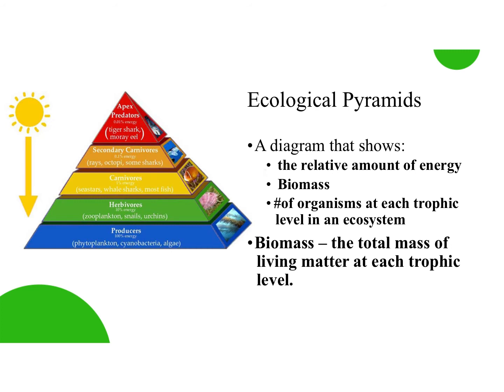Our third type of diagram is called an ecological pyramid — you might also see it called a biological pyramid or an energy pyramid. These show a couple of things: the relative amount of energy in an ecosystem, something called biomass — which is the total mass of living matter at a trophic level — and the number of organisms in each level. Write down what is in an ecological pyramid, and on the next slide we're going to draw and label a pyramid.